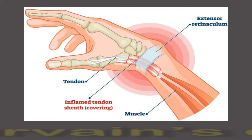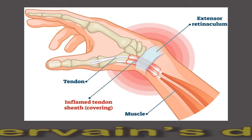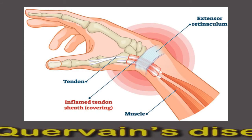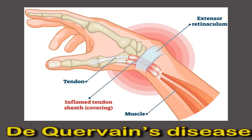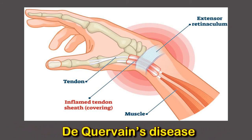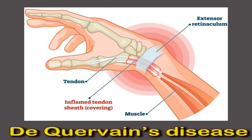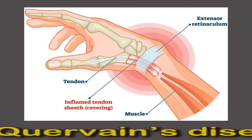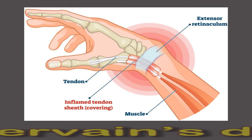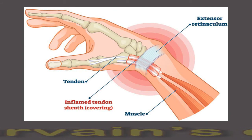In DeQuervain's disease, tendons and their coverings on the thumb side of the wrist become inflamed and swell. The exact cause is not known, but it is often associated with an injury to the area or overuse. Symptoms include a grating feeling inside the wrist, swelling, and weakness along the wrist, forearm, and thumb.